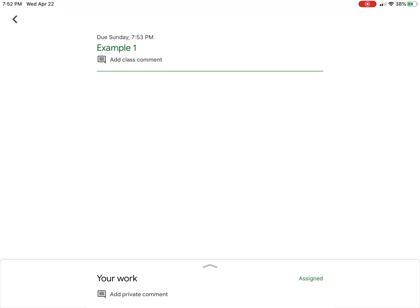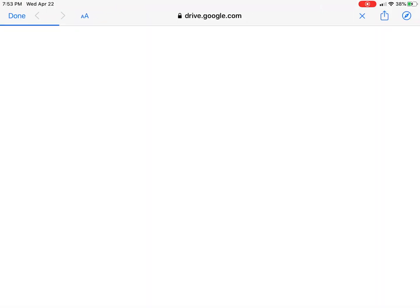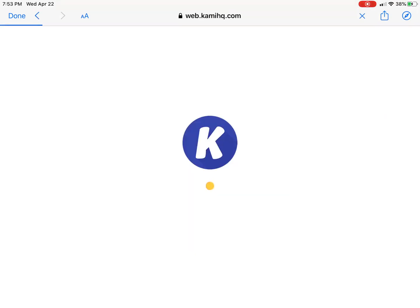In the bottom right select assigned and then select the PDF. In the upper right you're going to see what looks like a square with an up arrow. Select there and then select open with annotate with Kami.